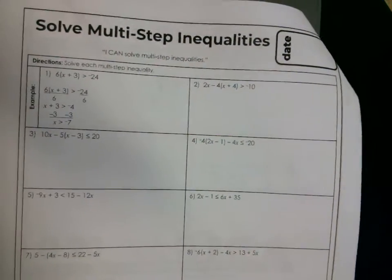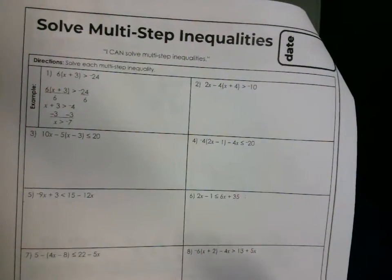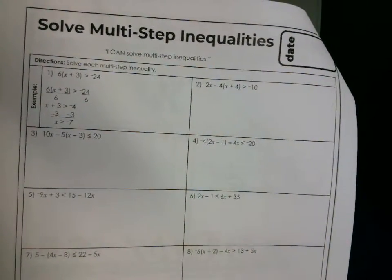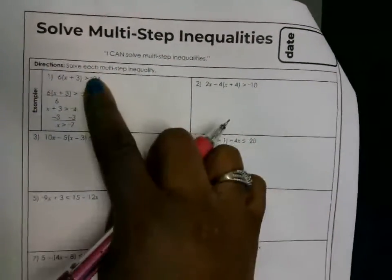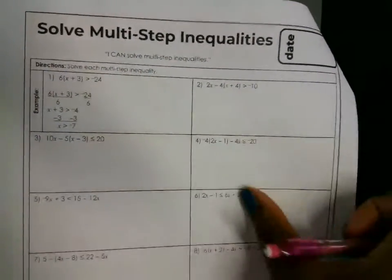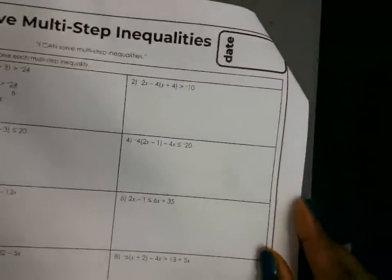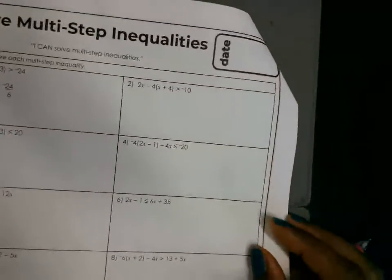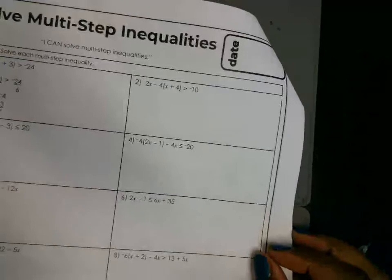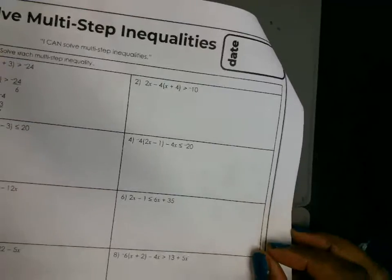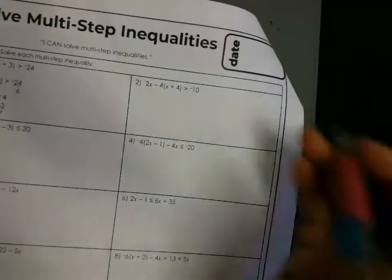All right, Math 1, this is our homework help video today on multi-step inequalities. This one's already done for you, let's do this one. We use the same steps for solving an equation. The only thing that's different is if you multiply or divide both sides by a negative number, then the inequality is going to flip.